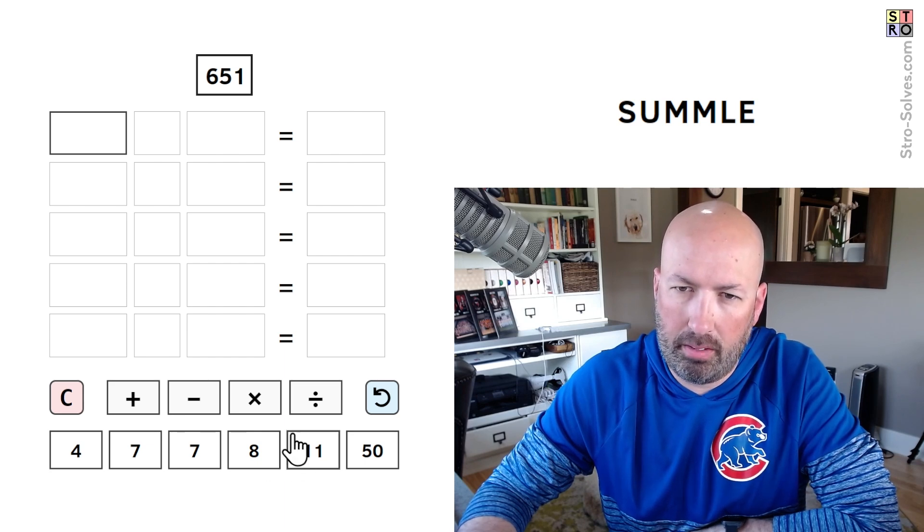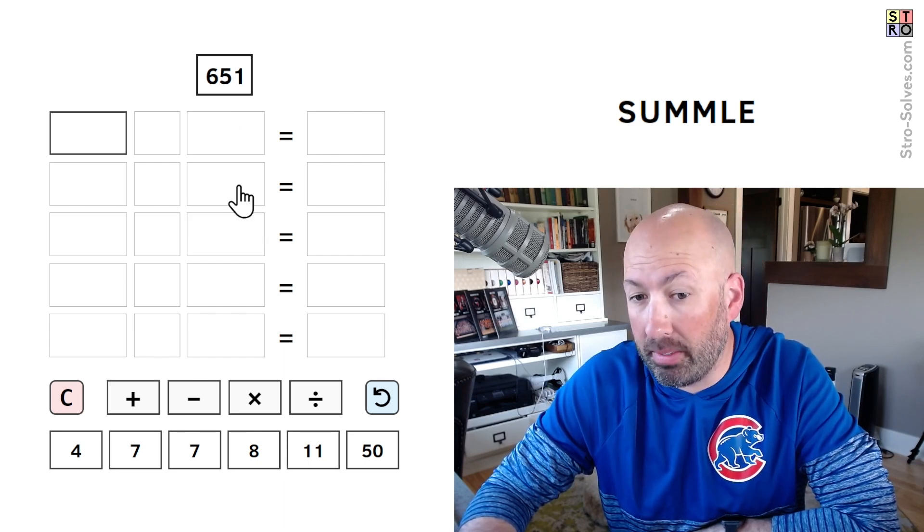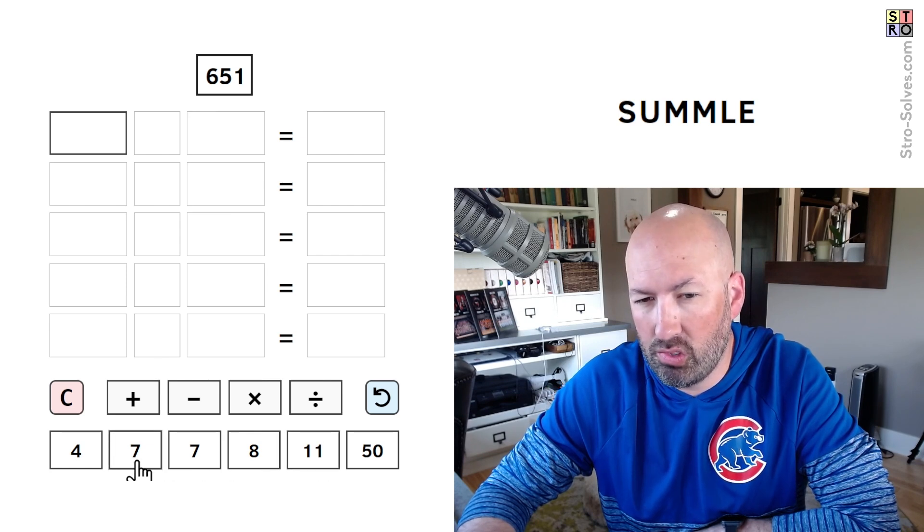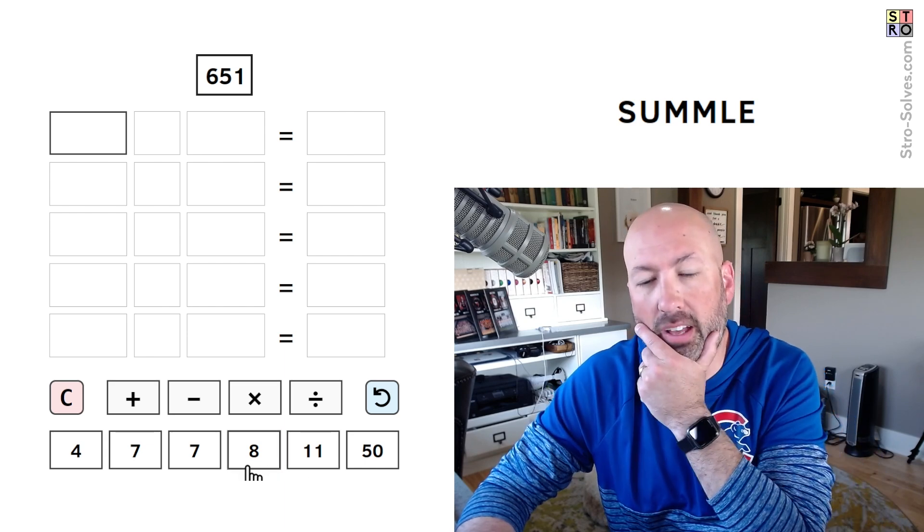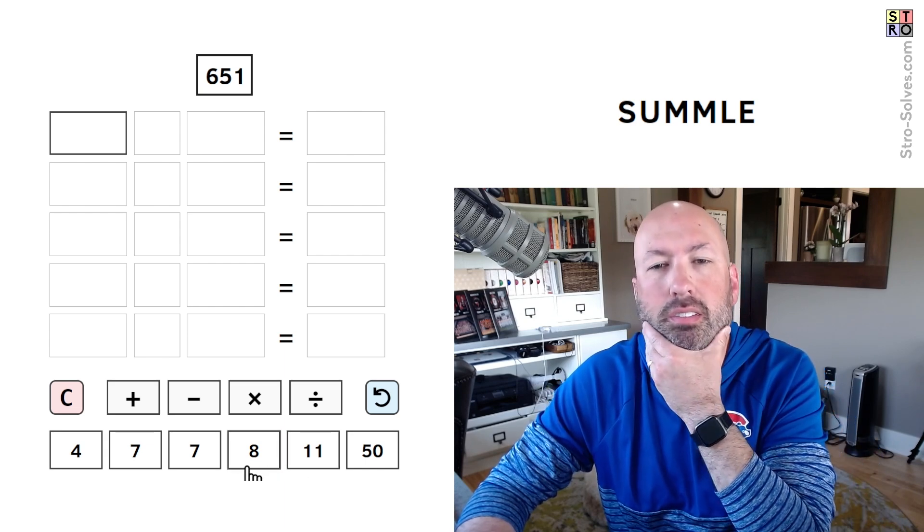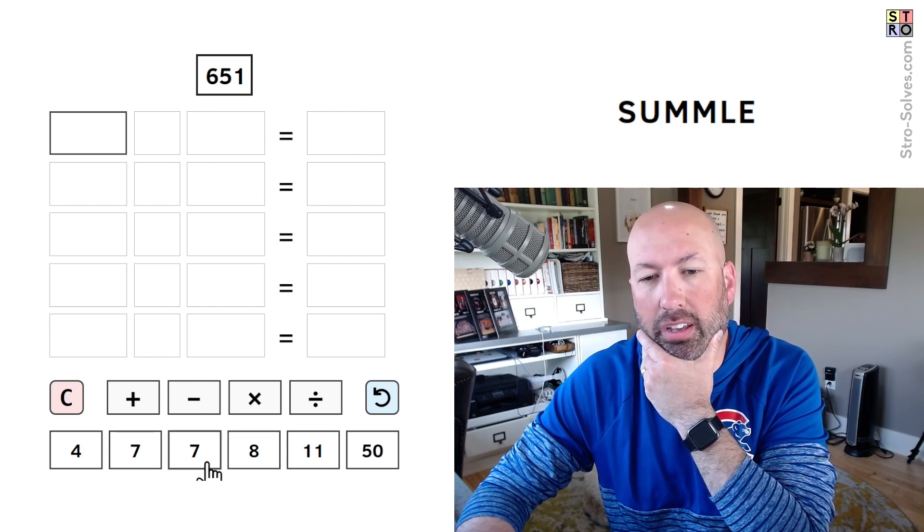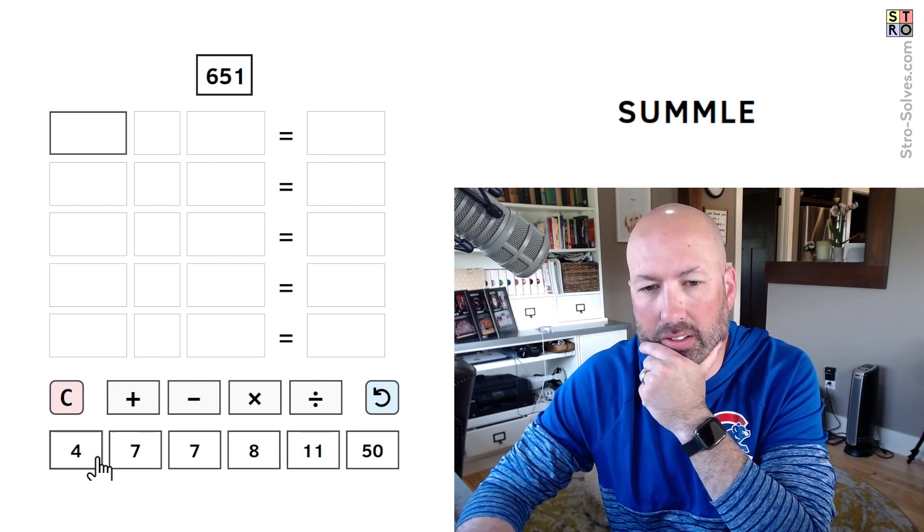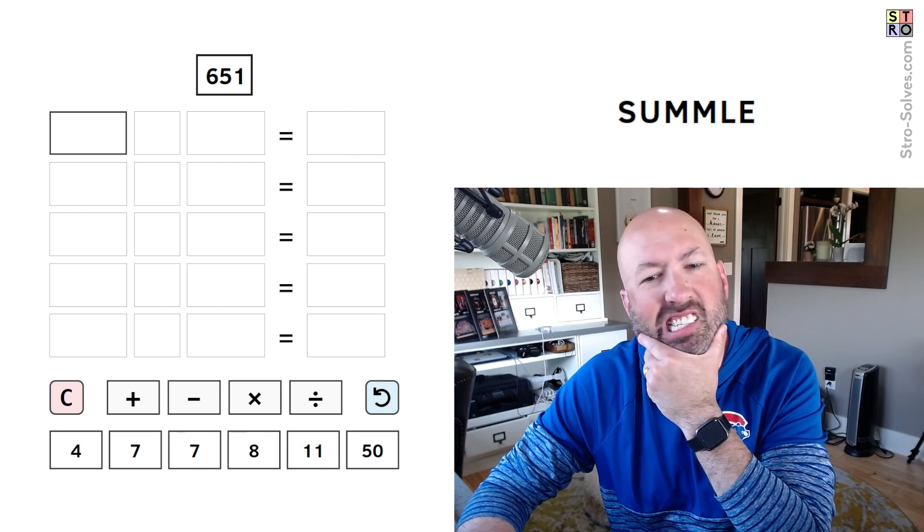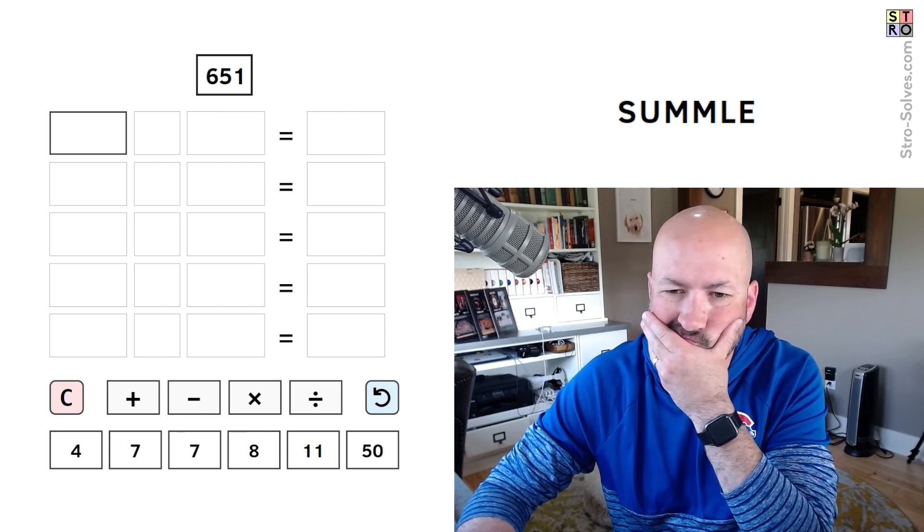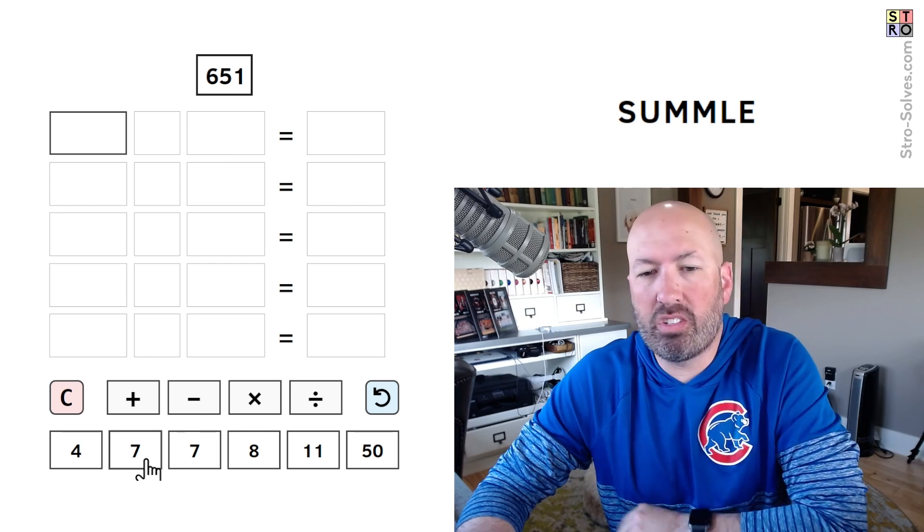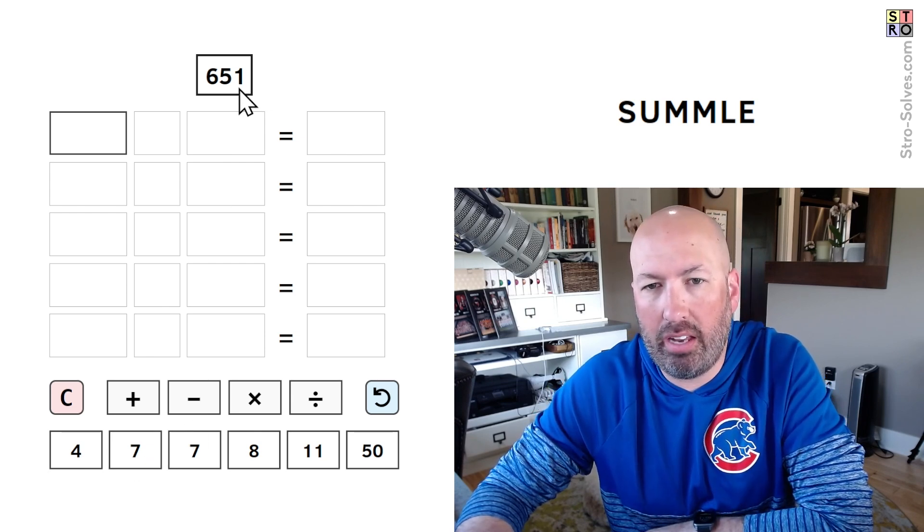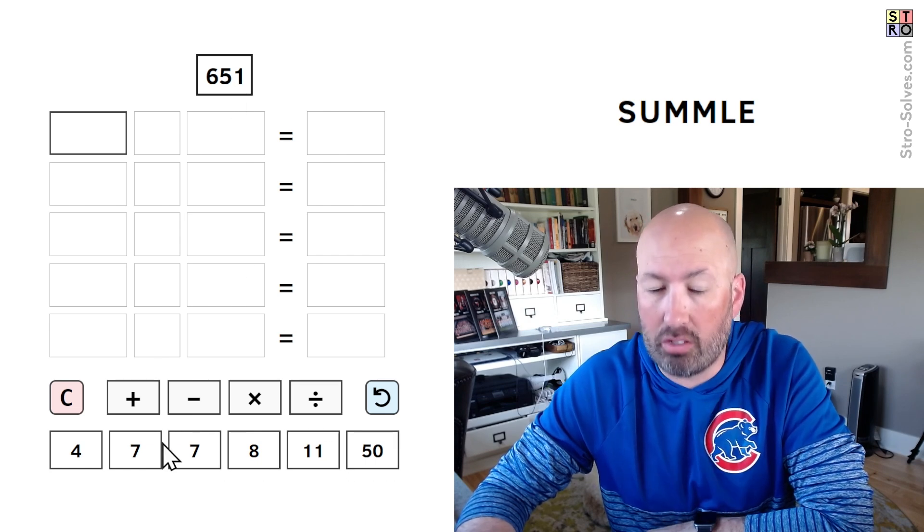50 times 13 would be 650. How do we get 13, and then we still need to be able to get a 1. Because 8 minus 7 would give us the 1, but we'd have to make 13 with 11, 4, and 7.